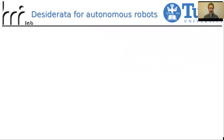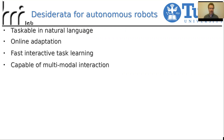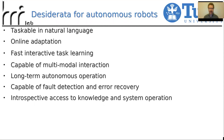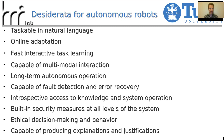There are several desiderata that we have for autonomous robots in the future. We want them to be taskable in natural language, adaptable online, allow for fast and interactive task learning from humans, be capable of multimodal interactions, support long-term autonomous operation, be capable of detecting faults and recovering from errors, have introspective access to knowledge and system operations, have built-in security measures and ethical decision-making, and be able to produce explanations and justifications if desired.